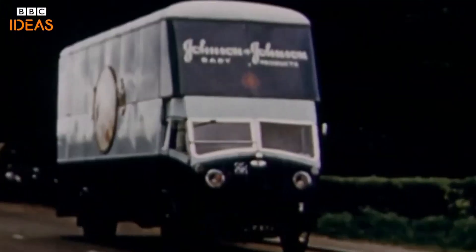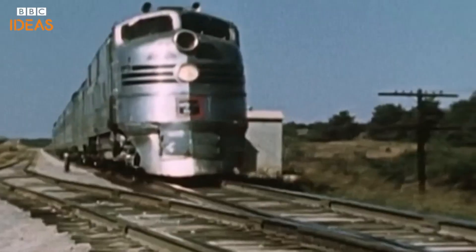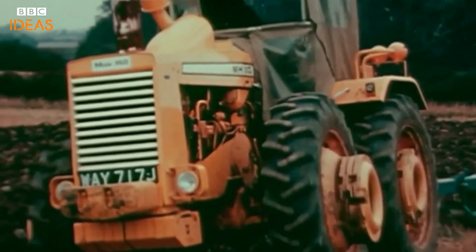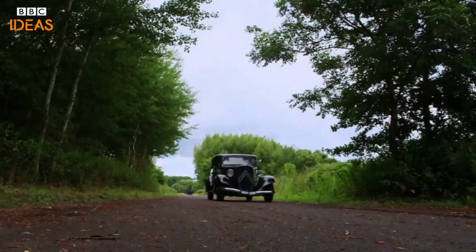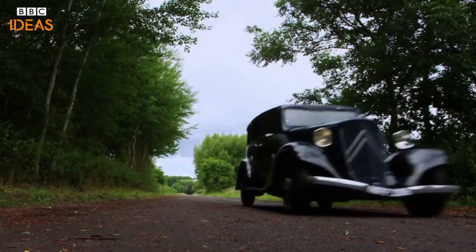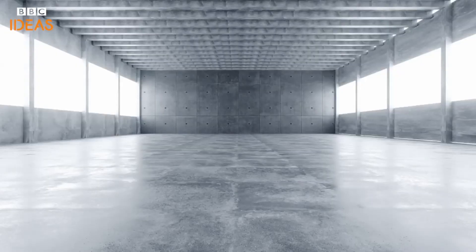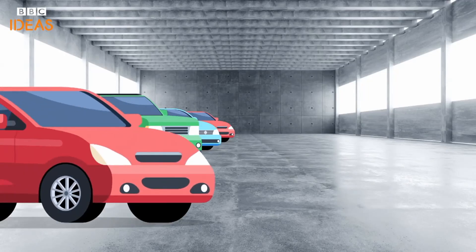The diesel engine went on to revolutionize the transport system after the First World War, powering trains, boats, and buses. The first diesel lorries appeared on roads in the 1920s and 30s. The first production diesel car in the world was the Citroen Rosalie, introduced in 1933. Until very recently, half of all new cars sold in Europe were diesel.